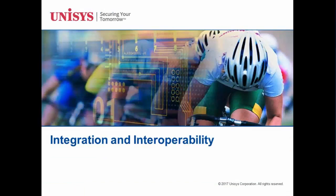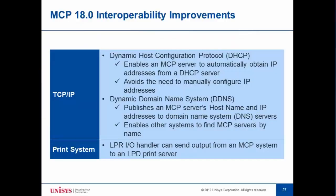In the area of integration and interoperability, TCP/IP has been enhanced — in addition to performance improvements — to support DHCP and DNS. DHCP, the dynamic host configuration protocol, enables MCP servers to automatically obtain their IP addresses from a DHCP server, avoiding manual IP address configuration. DNS allows an MCP server's hostname and IP address to be published into DNS servers, so other systems can find MCP servers by name as well as by IP address. The print system also has a new LPRIO handler that can send output from an MCP system to an LPD print server.